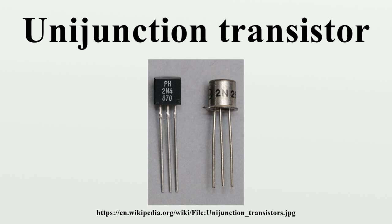The UJT has three terminals — an emitter and two bases — and so is sometimes known as a double-base diode. The base is formed by a lightly-doped N-type bar of silicon. Two ohmic contacts B1 and B2 are attached at its ends. The emitter is of P-type and is heavily-doped. This single PN junction gives the device its name. The resistance between B1 and B2 when the emitter is open circuit is called the inter-base resistance.